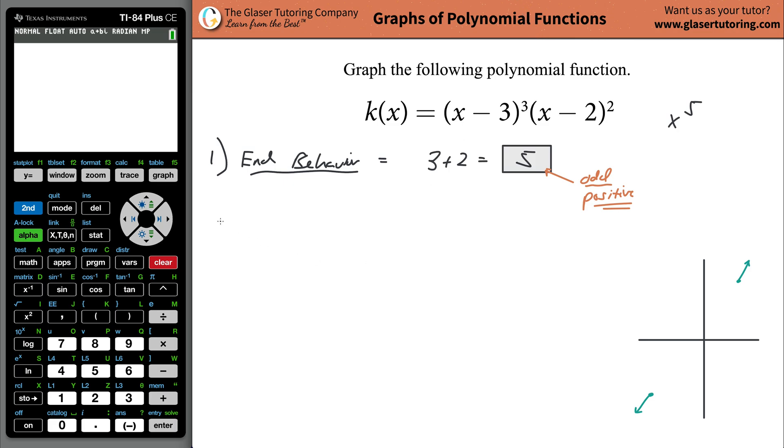The second piece is finding the x-intercepts. How do we find them? You have to get the function down into factored form. This is already in factored form for us, so that is great. Once you do, you take the values inside those parentheses and set them equal to zero. So x minus three equals zero, and x minus two equals zero.